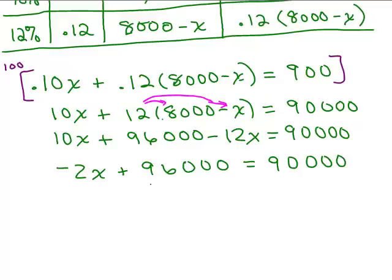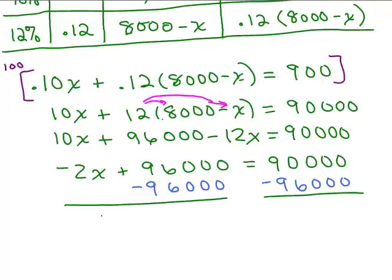So, we could subtract 96,000 from both sides. We're isolating the variable on the left side. So, negative 2X equals, all right, now how do you do 90,000 minus 96,000? Well, there's more negatives so the answer is going to be negative and then you subtract. 96,000 minus 90,000 is negative 6,000.